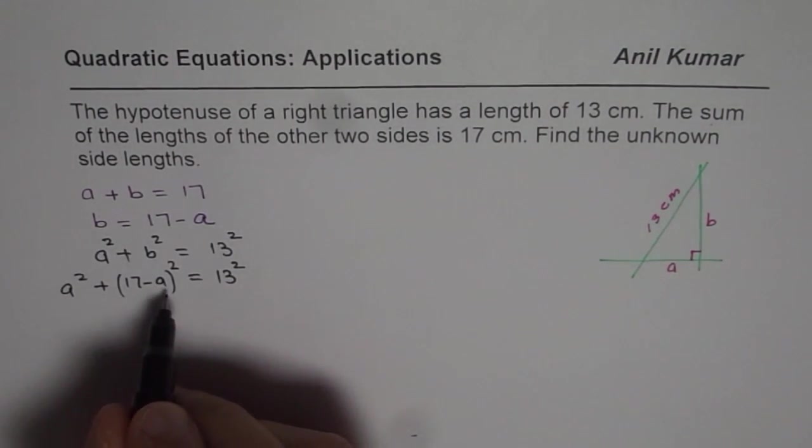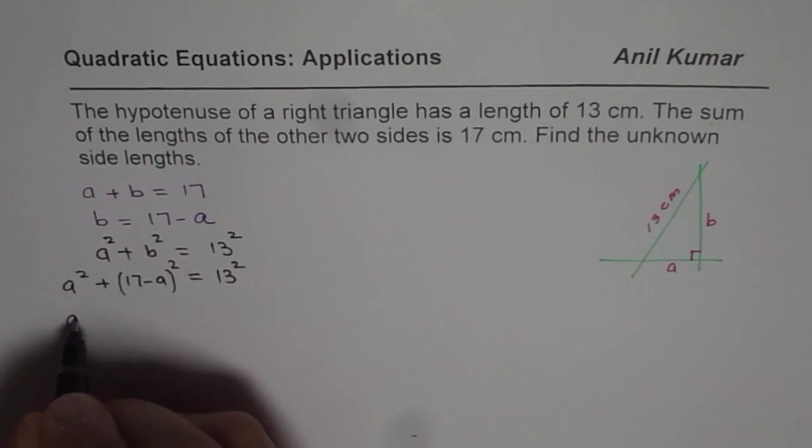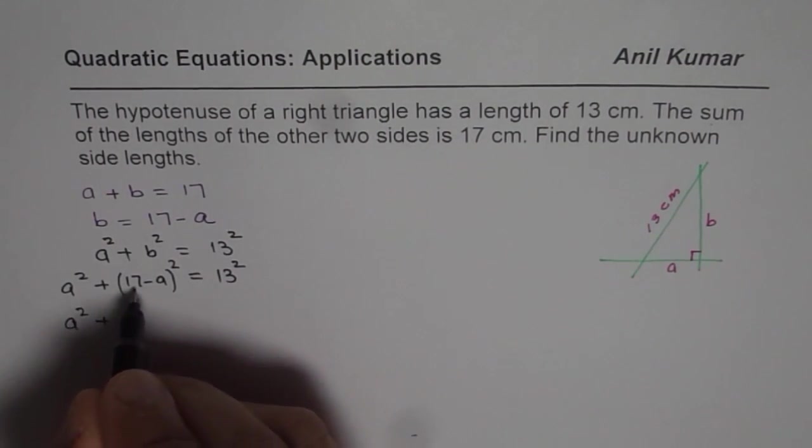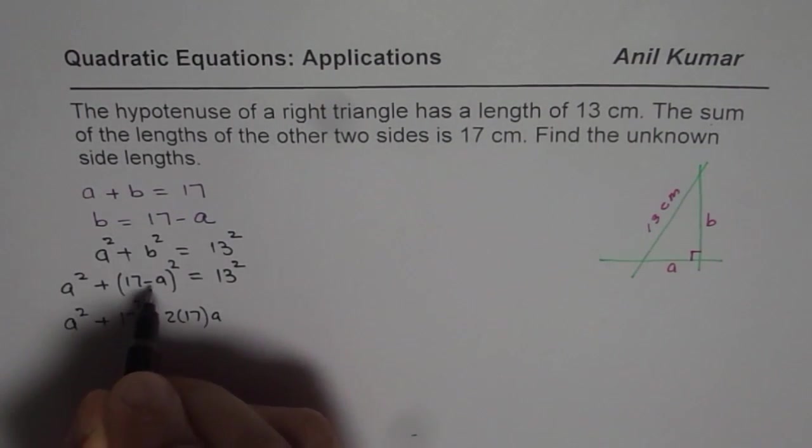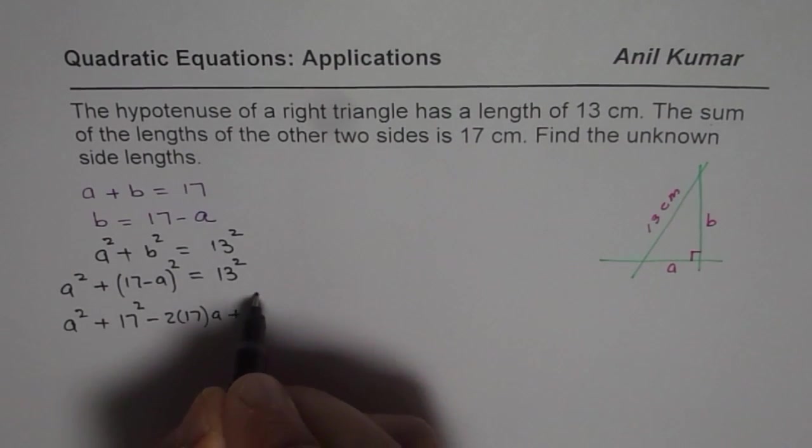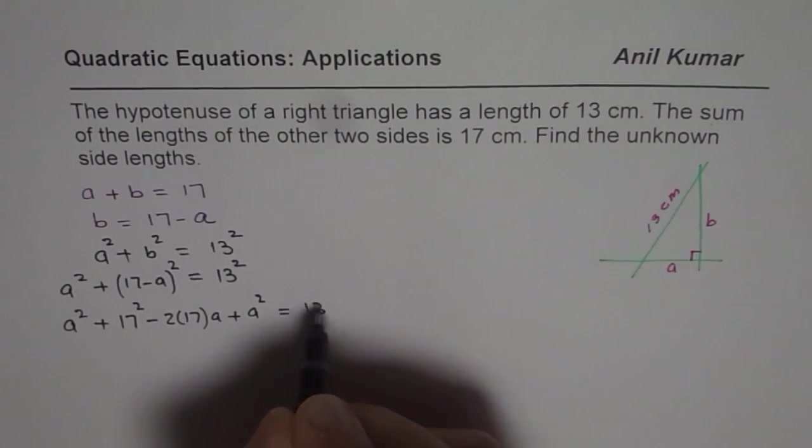Now we can expand and simplify. So we get A² plus, when you expand this, you get 17² - 2(17)(A) + A² = 13².